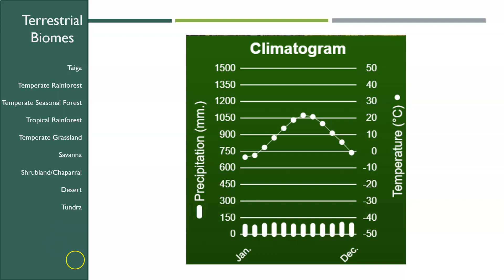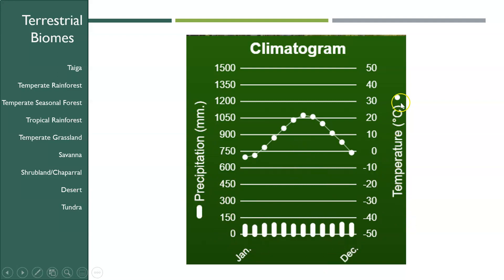For each of the biomes we're going to look at in this unit, we're going to look at a climatogram. Here's an example: it has two y-axes. One is precipitation measured in millimeters, shown as bars at the bottom, and temperature is shown as dots on the graph in degrees Celsius. You don't use these to pick out specific numbers and compare them, because different parts of the globe will have different numbers — we're looking at overall patterns.